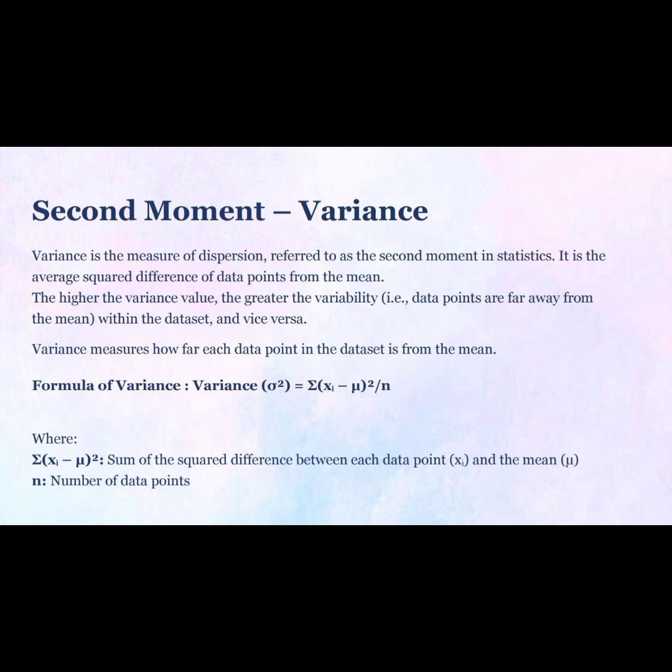The formula for variance is: Variance (S²) = Σ(x − μ)² / n, where Σ(x − μ)² is the sum of the squared differences between each data point and the mean, and n is the number of data points.